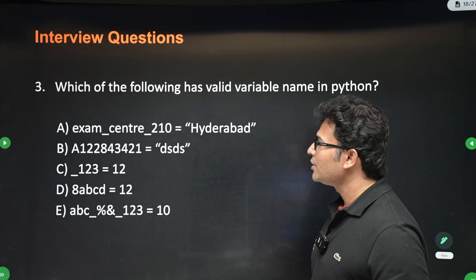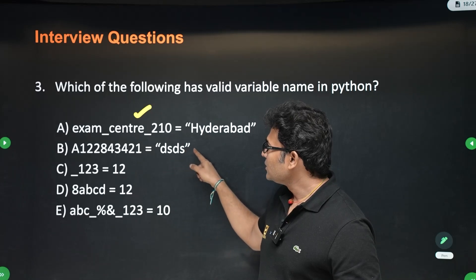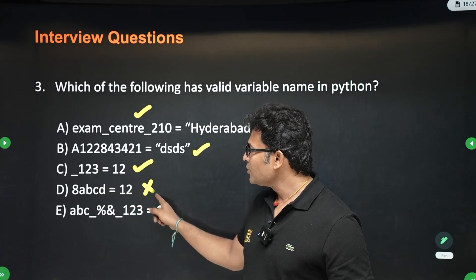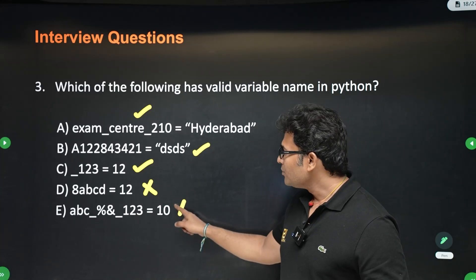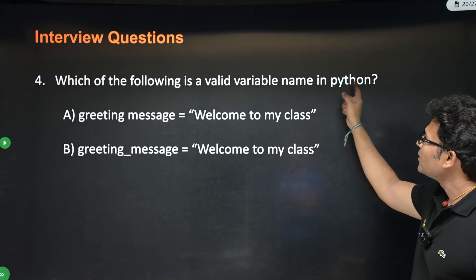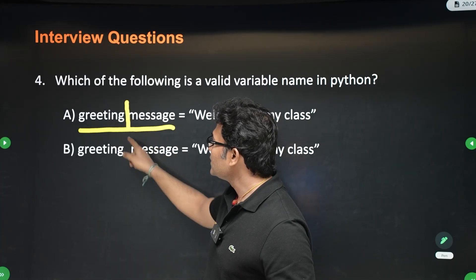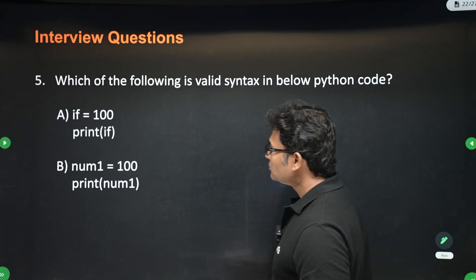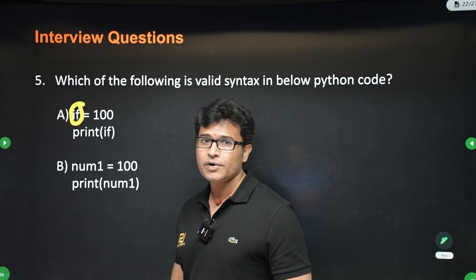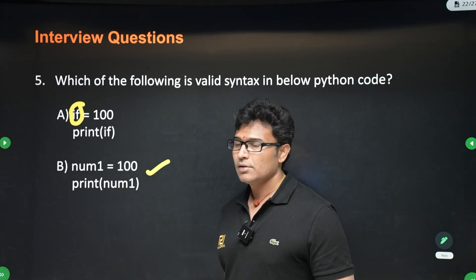And then which of the following has valid variable name? So this is valid because it is starting with alphabet and then it has alphabets and underscores. And this is valid because it is starting with alphabet. And this is valid because it is starting with underscore and it has numbers. But this is not valid because it is starting with a number. This is not valid because we have special symbols here. Now, which of the following is a valid variable name in Python? If you look at it, this is a variable name. And in this variable name, there is a space. Since there is a space, it is not valid.